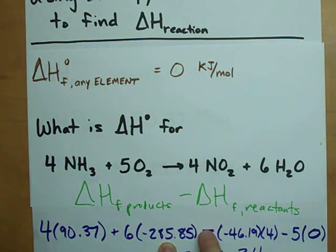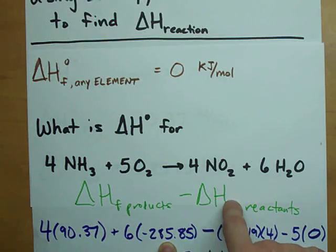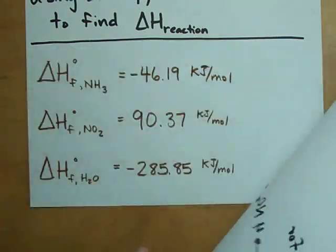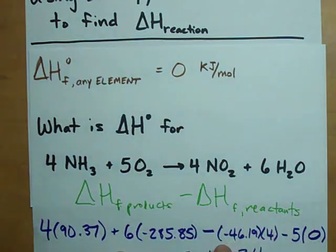And I have to subtract all the enthalpies of formation for all the reactants. Like NH3, which has an enthalpy of formation of negative 46. And I have to subtract four of them. And then I have to subtract five times the enthalpy of formation of oxygen.